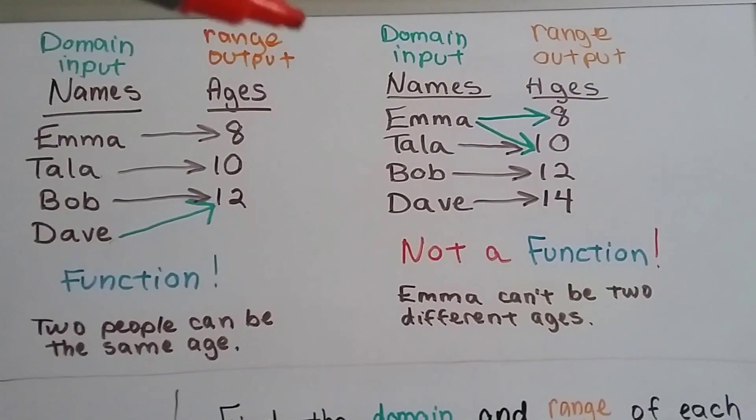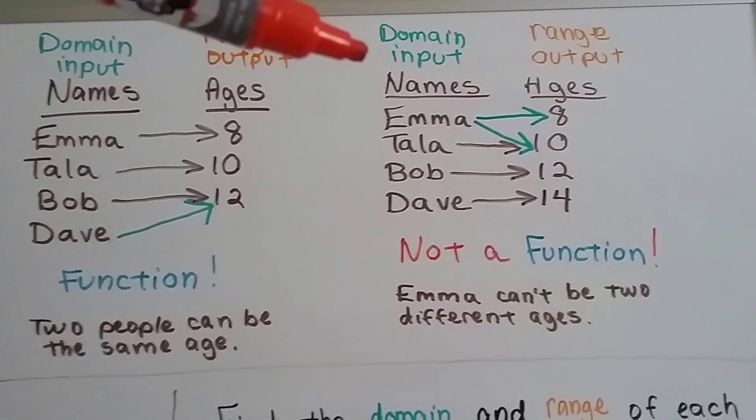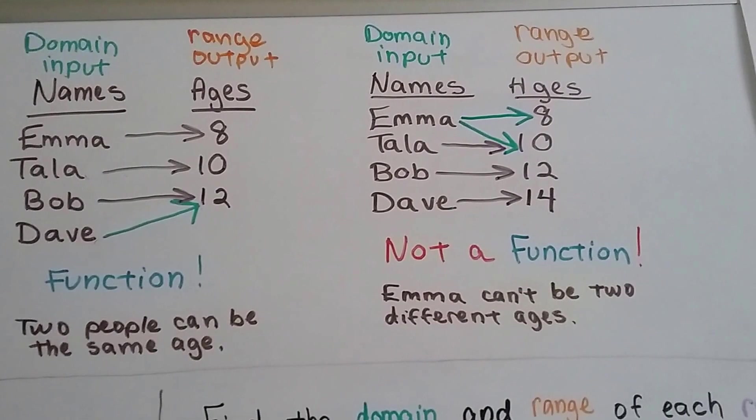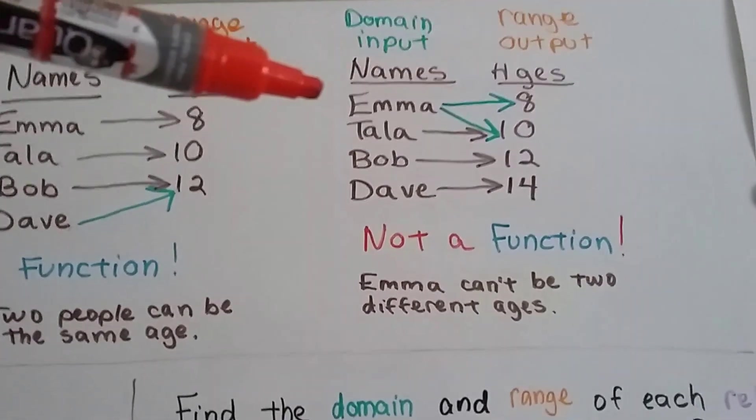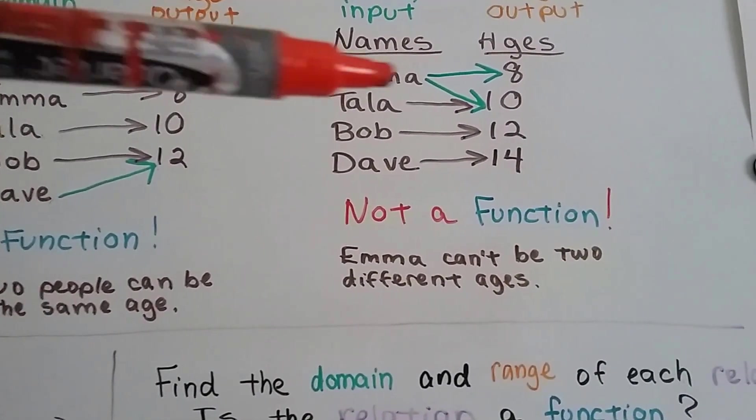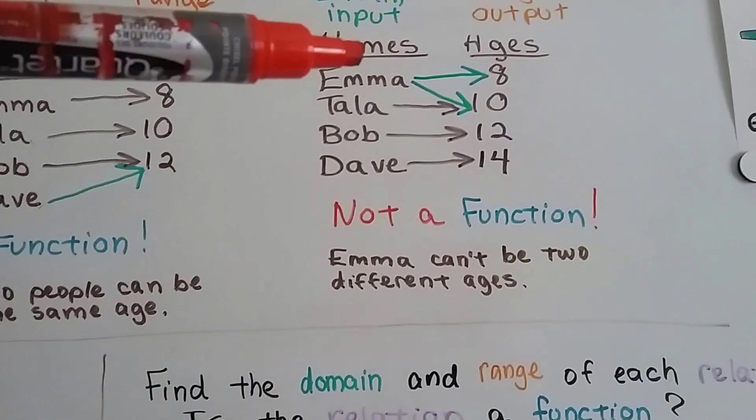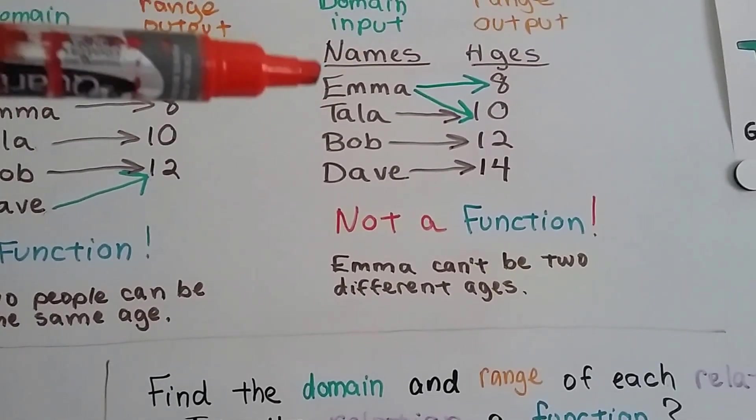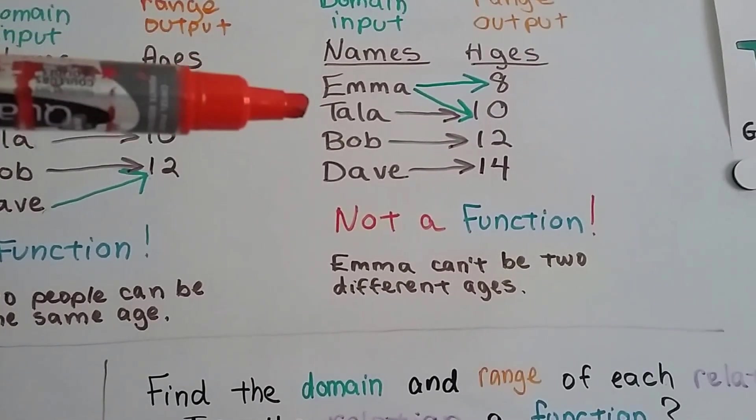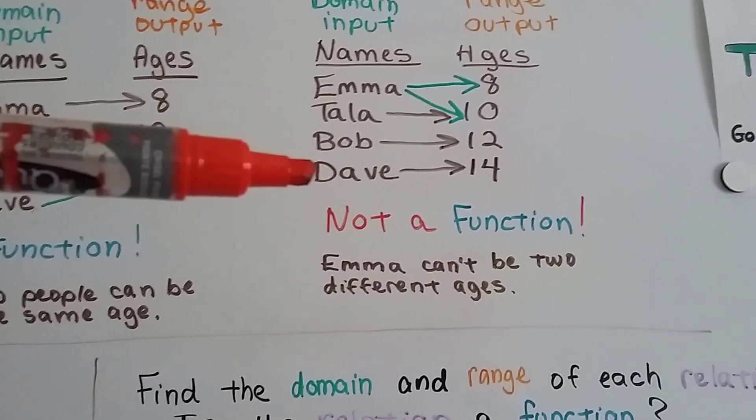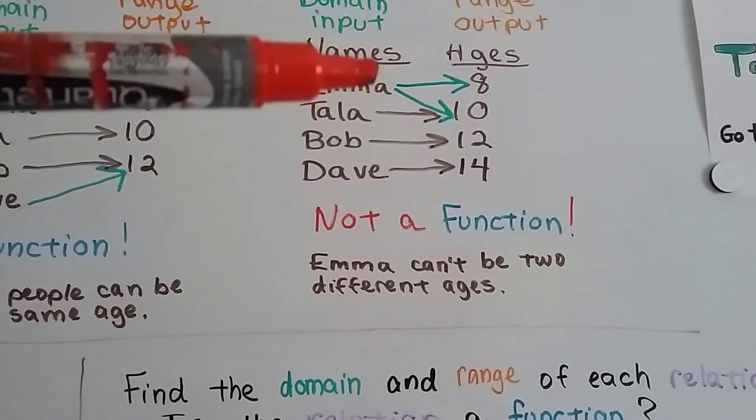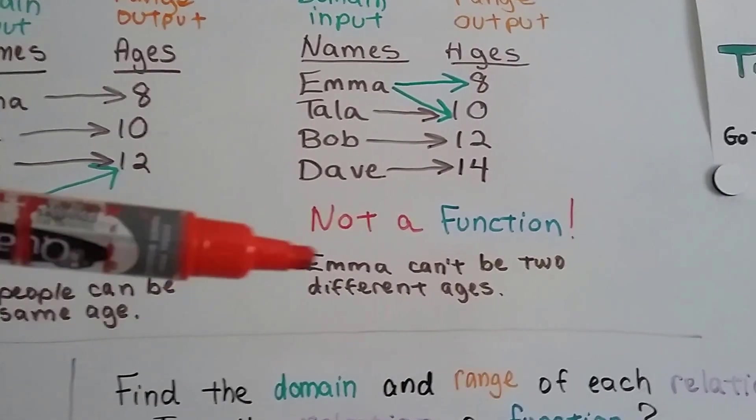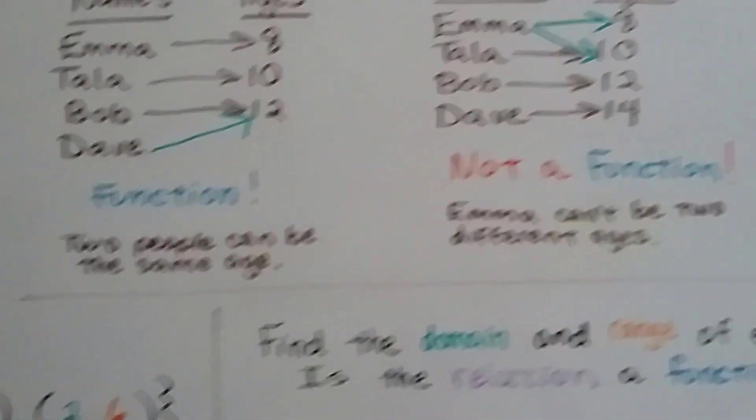Now look on this side. Here's our domain and our inputs, our range, which is our outputs. We have our names and our ages. So Emma is 8, but then Emma is 10. That's only one person. And Tala is 10 and Bob is 12 and Dave is 14. Emma cannot be two different ages. So that's not a function. She can only be one age.